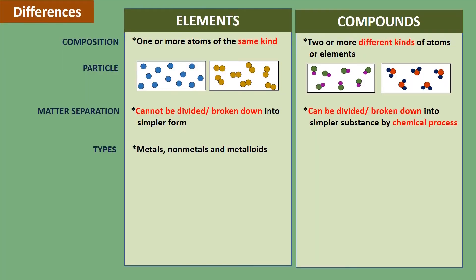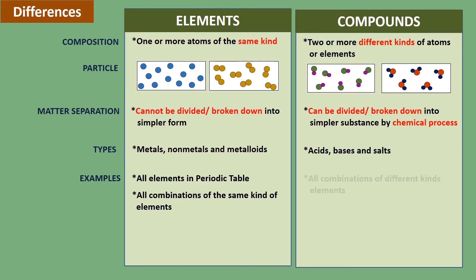The types of compounds on the other hand are acids, bases, and salts. Examples: the examples of elements are all elements in the periodic table and all combinations of the same kind of elements, while the examples of compounds are all combinations of different kinds of elements.